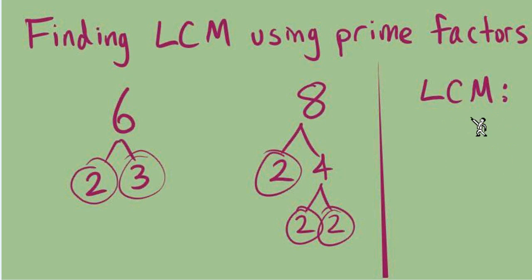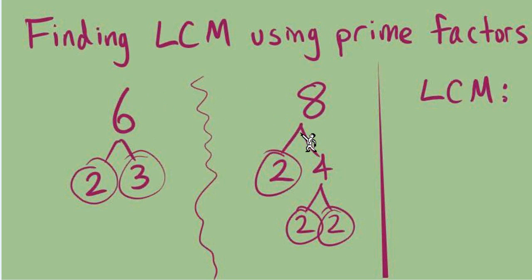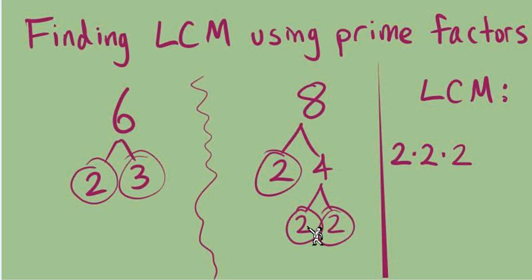First, think about the 2s. How many 2s do we need in the LCM? Keeping the two trees separate: in the tree for 6 there's only one 2, and in the tree for 8 there are three 2s. So the tree for 8 has the most — three 2s — and that tells us we need three 2s in the LCM. Now for 3s: in the tree for 6 we have one 3, and in the tree for 8 there are no 3s. So we see the most 3s in the tree for 6 — one 3 — and that's how many we'll use in the LCM.